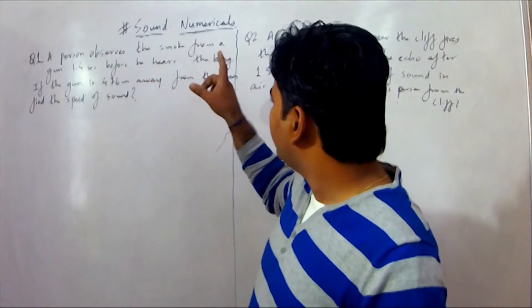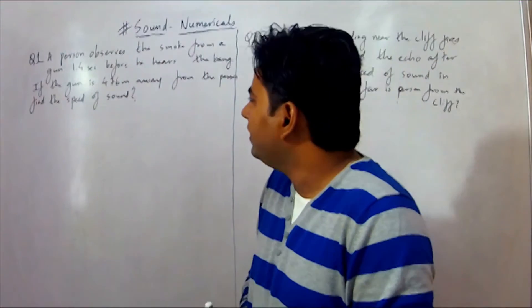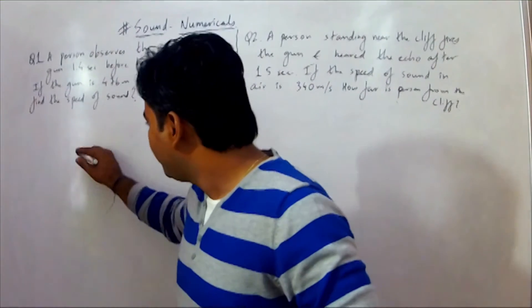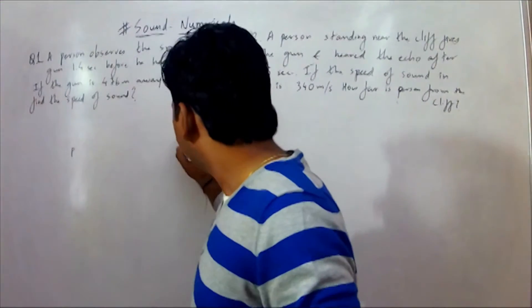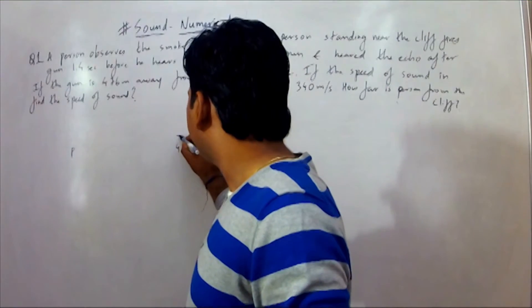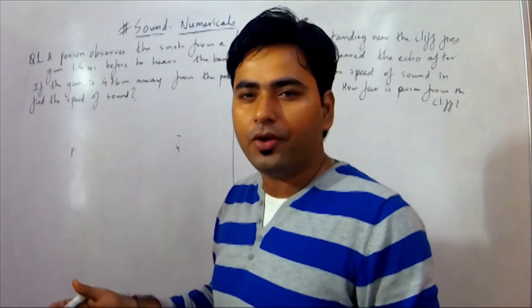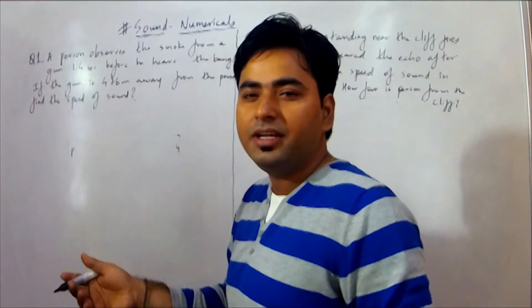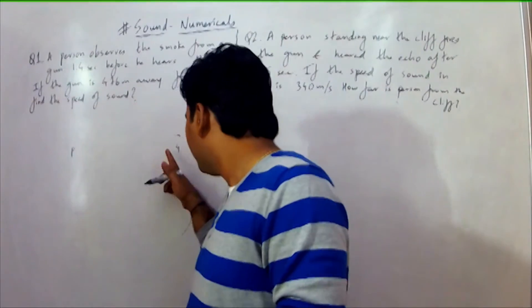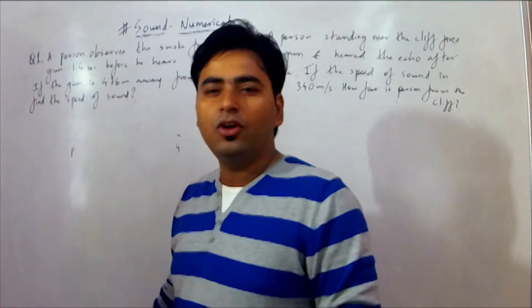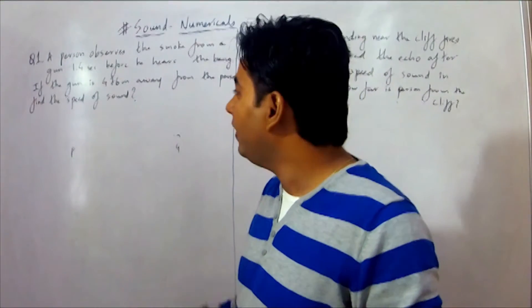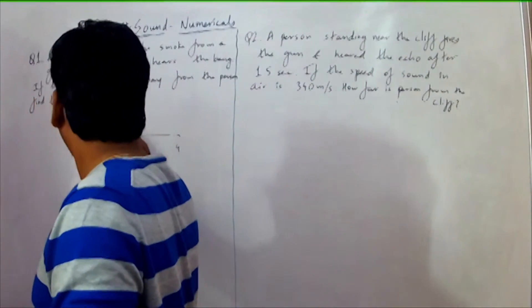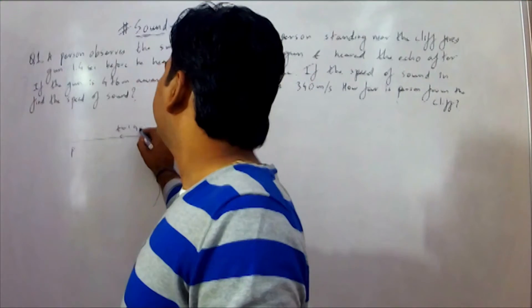The first question: a person observes smoke from a gun 1.4 seconds before he hears the bang. A person has a gun, he fires it, and the light — well, almost instantly — he absorbs the smoke visually. After that, the sound reaches him. So that time gap is 1.4 seconds.